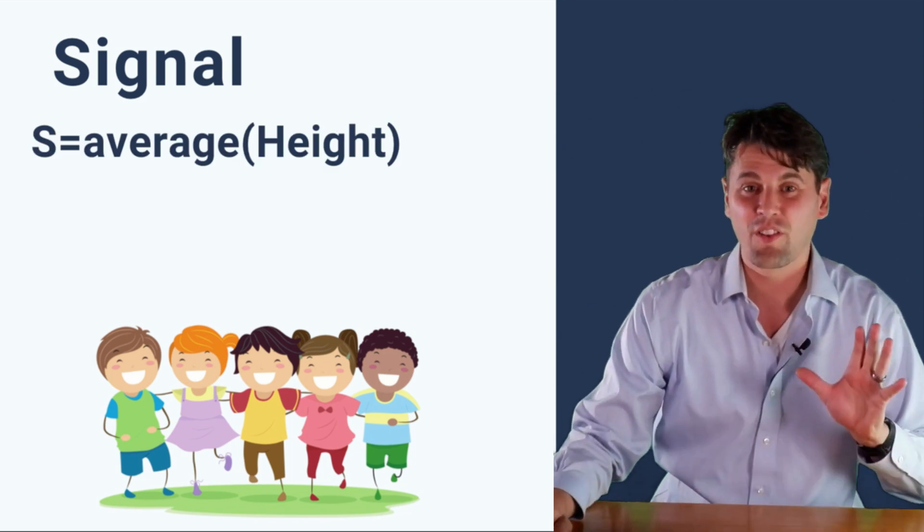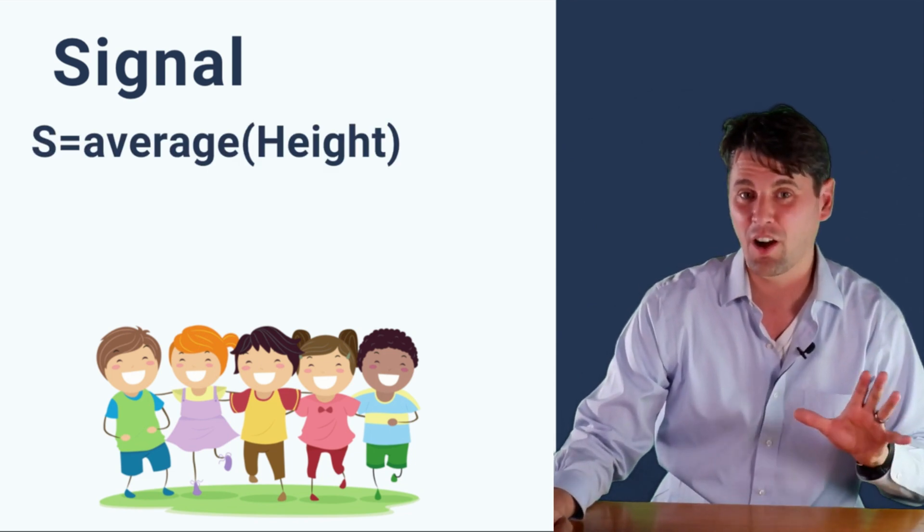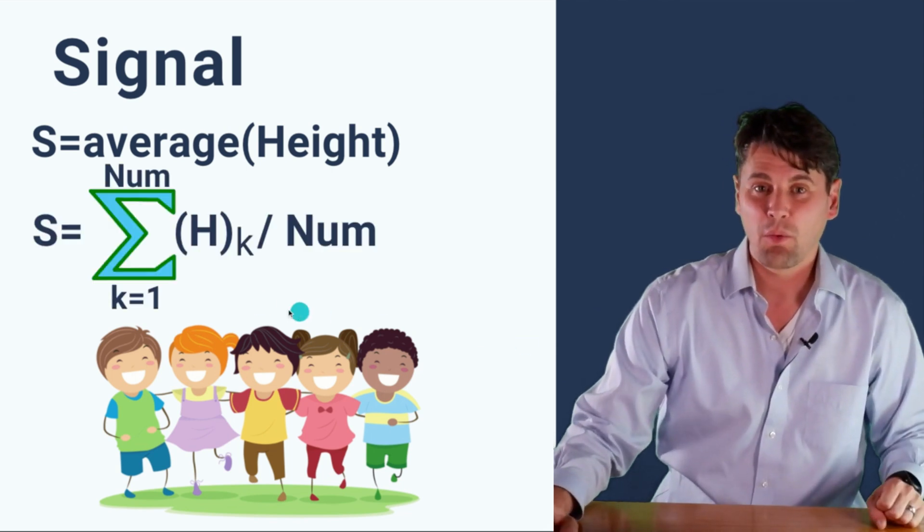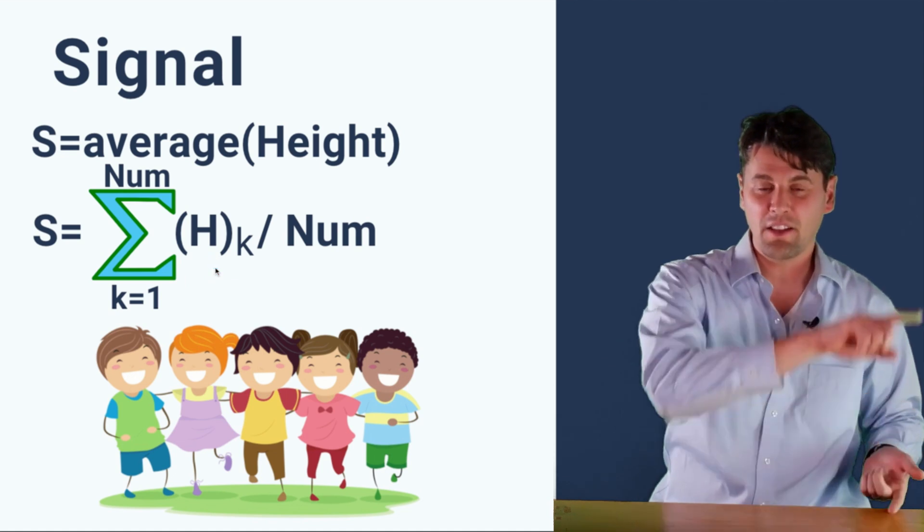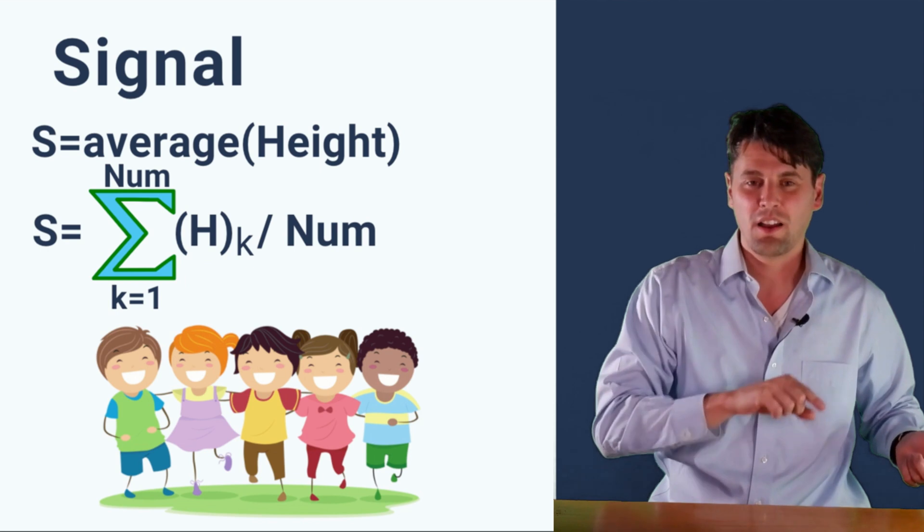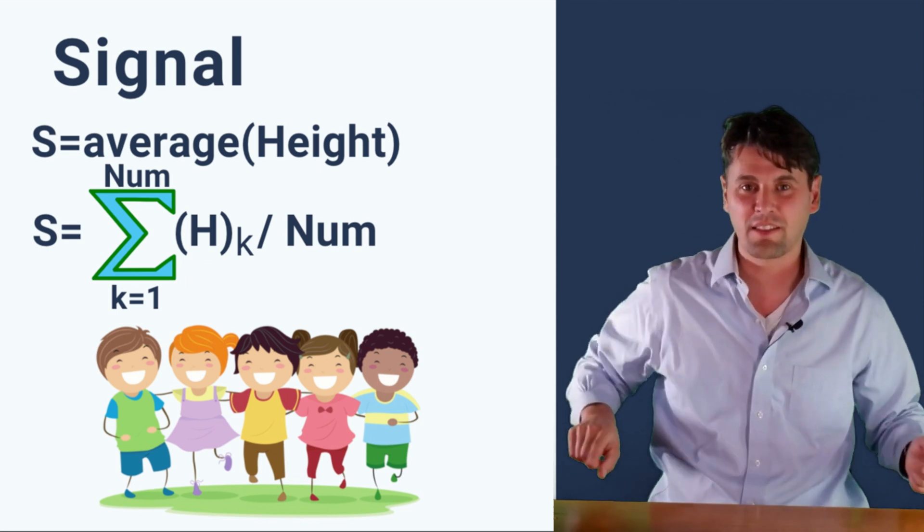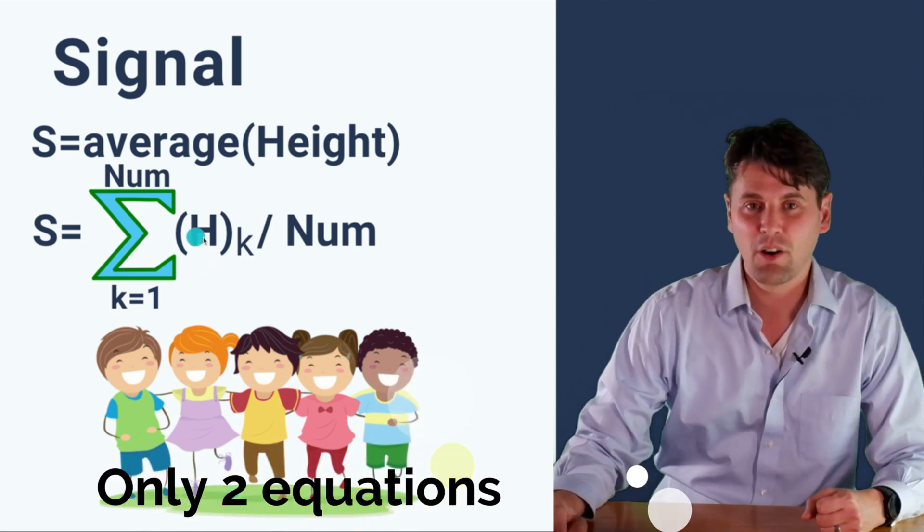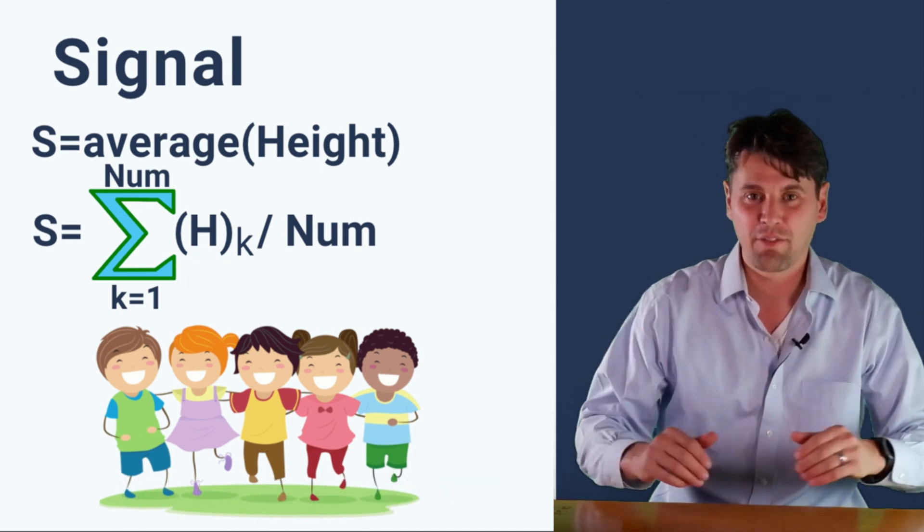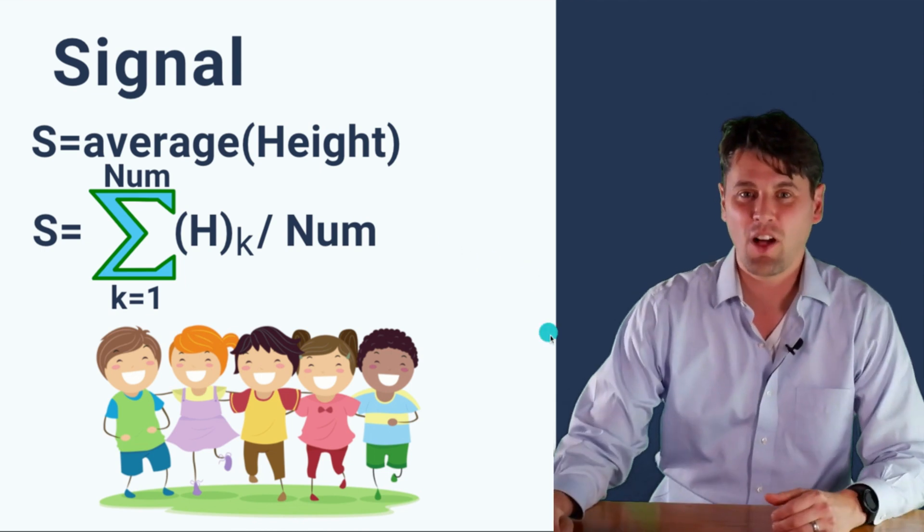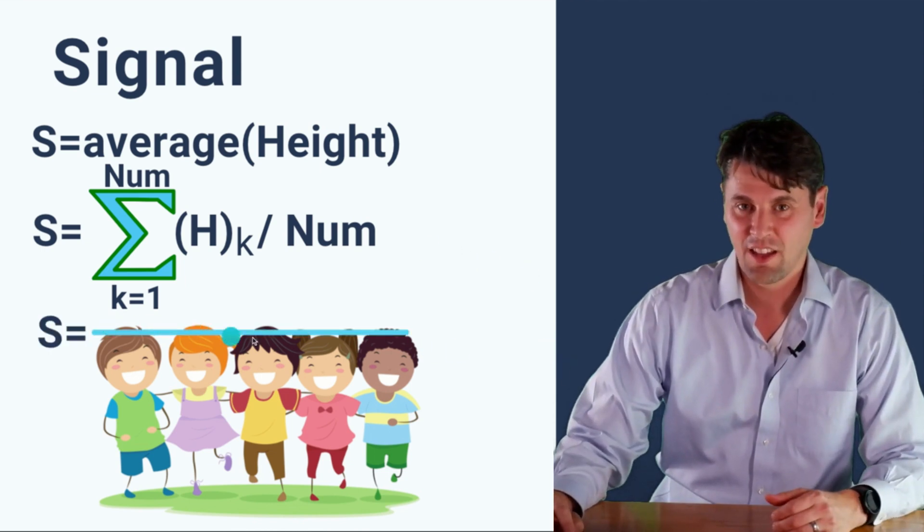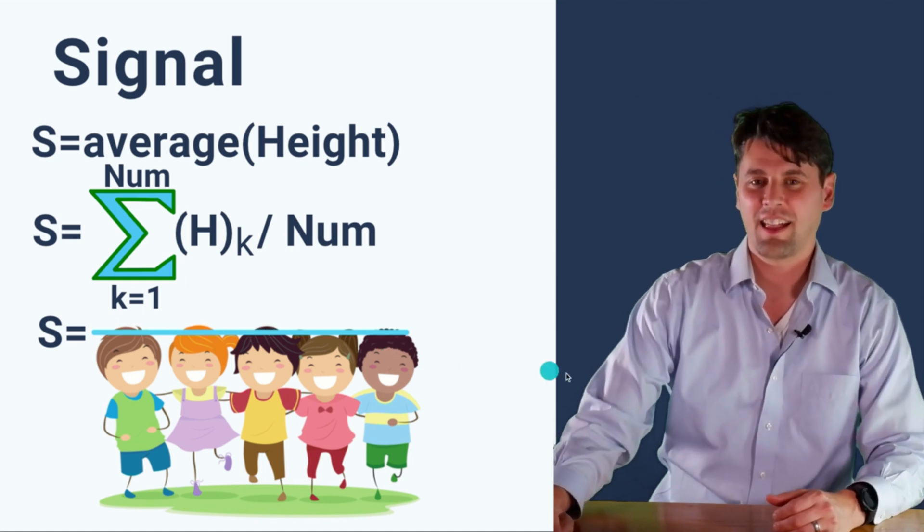We're looking for the average height, which is what we call our signal S. And if we go through, we can measure the height of each kid. This is what we call H, and then each one has an index we call k. So as we go along, we say 1, 2, 3, that's our index k. So we add those heights up, and then we divide by how many kids we have, and that's our average signal. So that's the signal S. We can just draw a line here that indicates the height of the kiddos as they're standing in line.